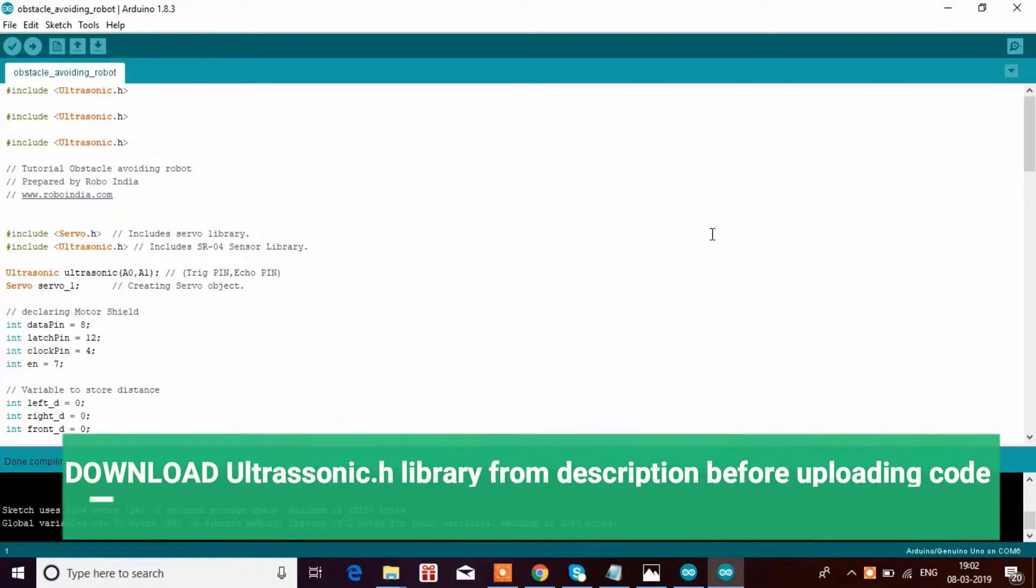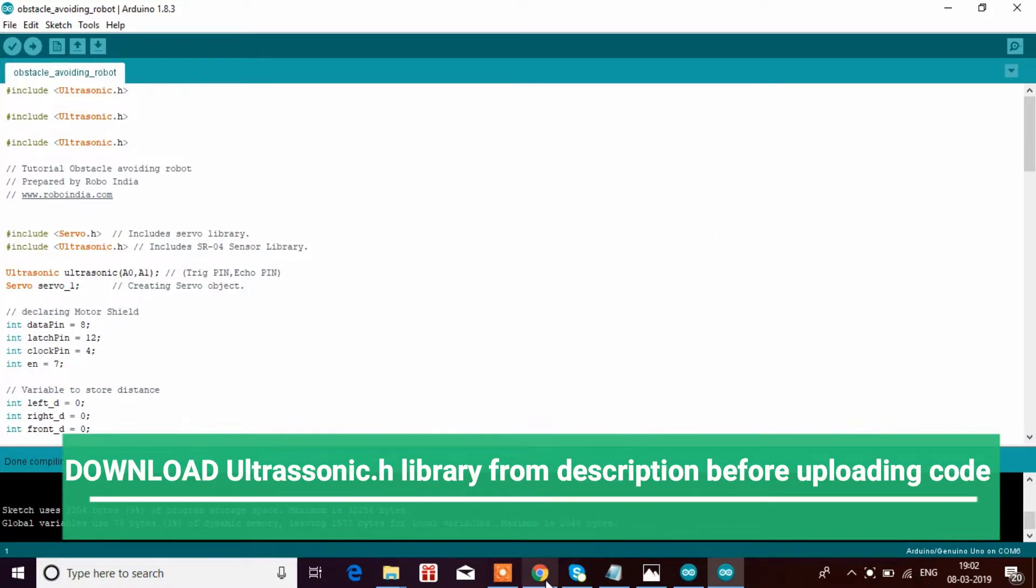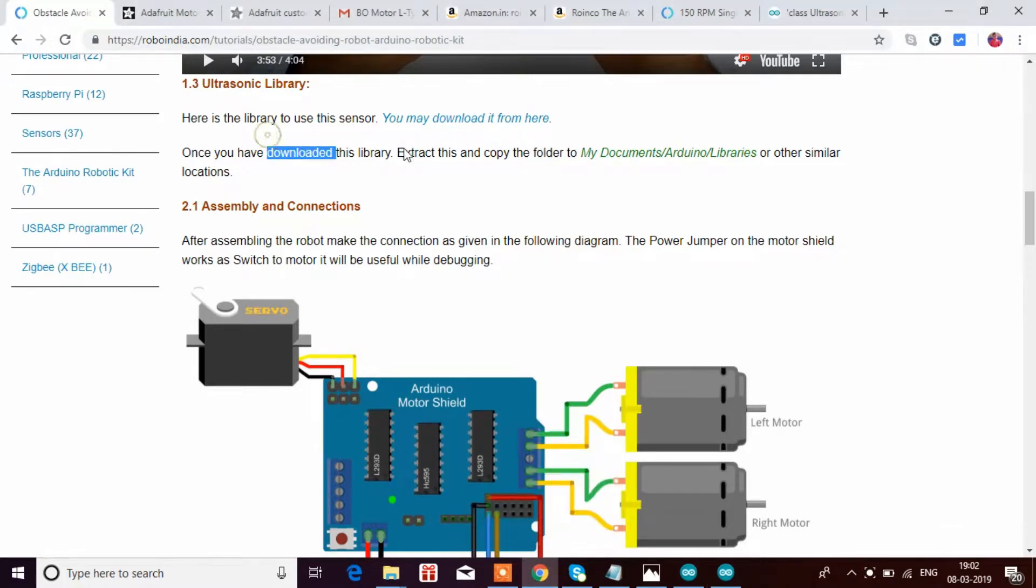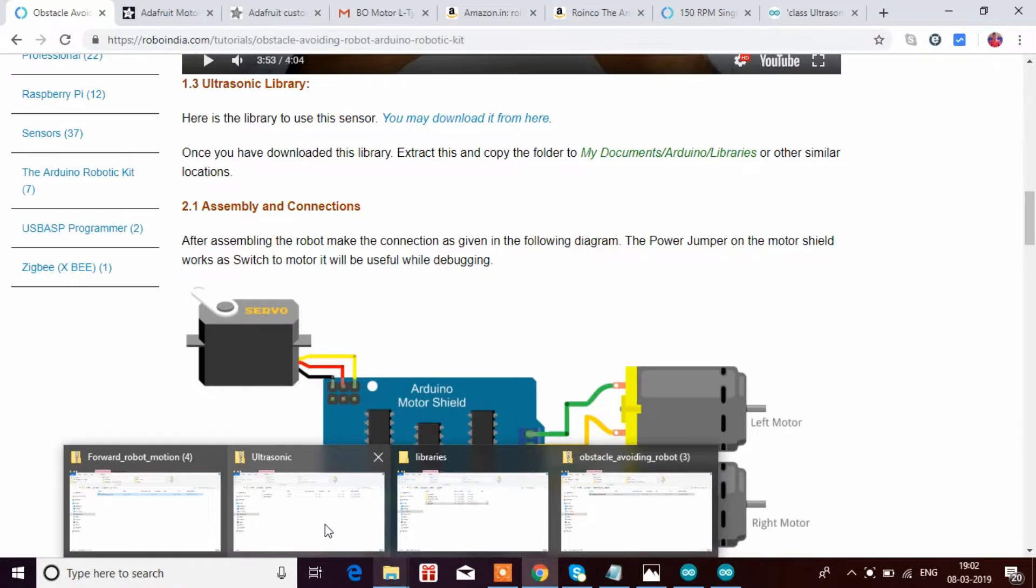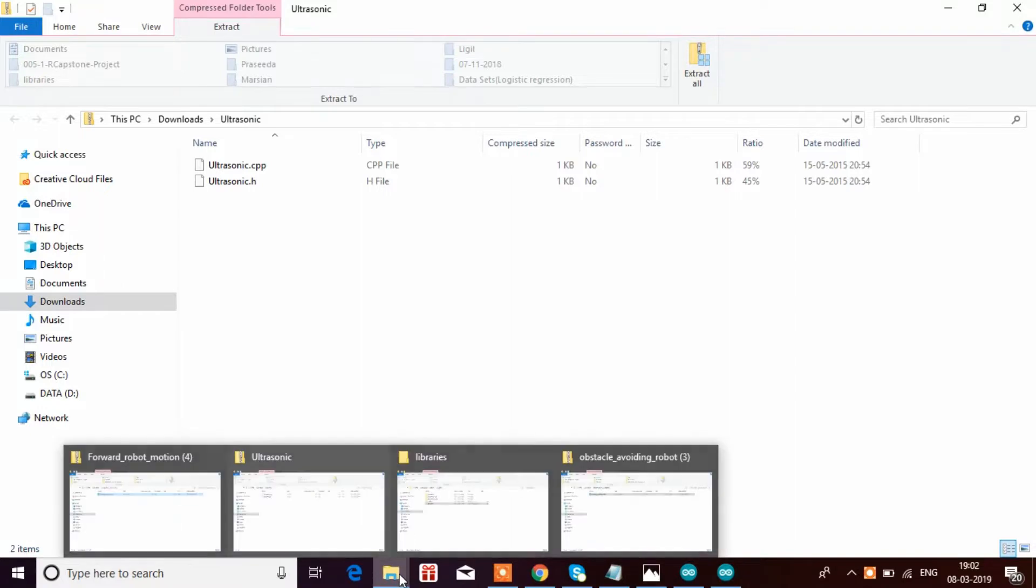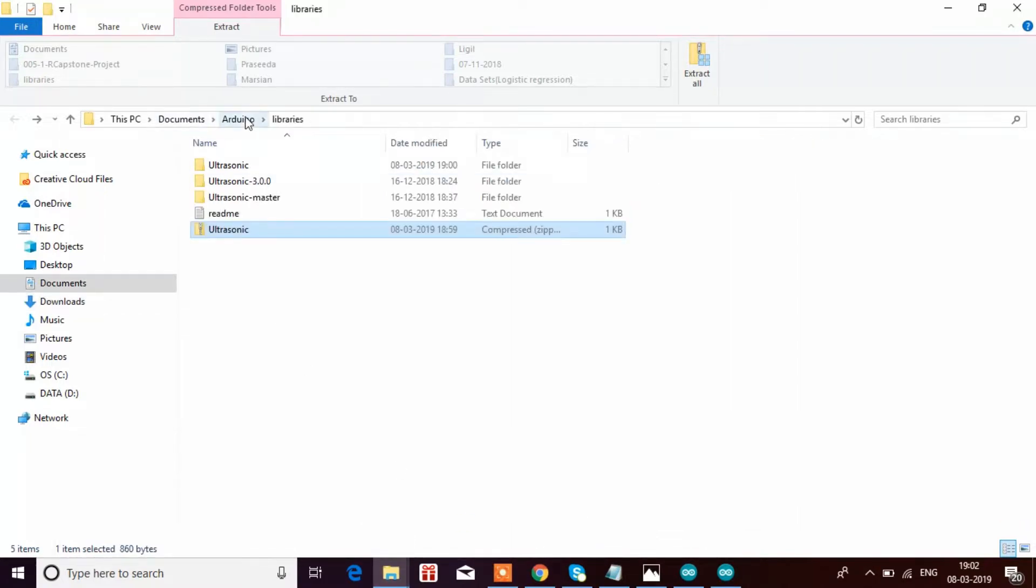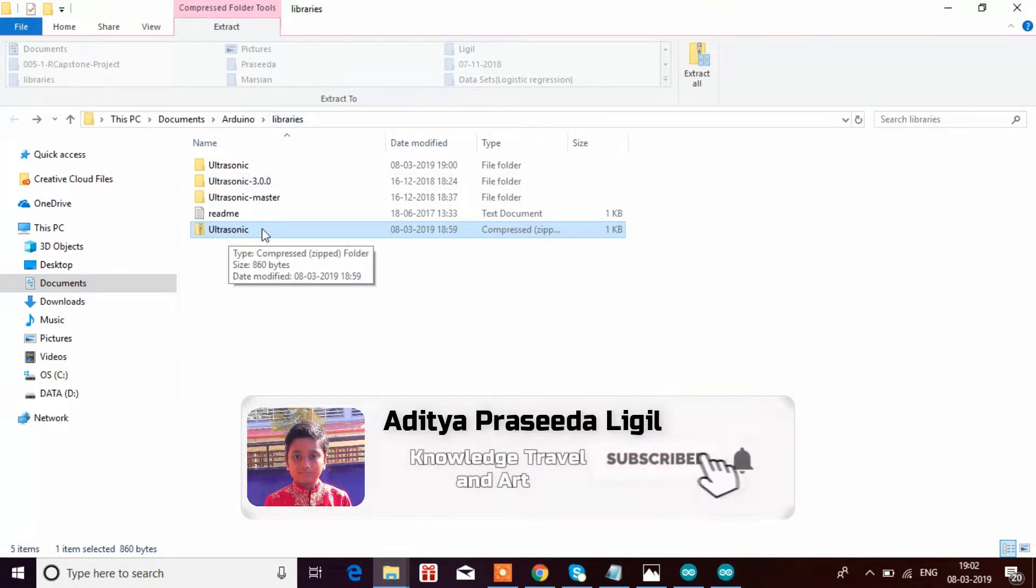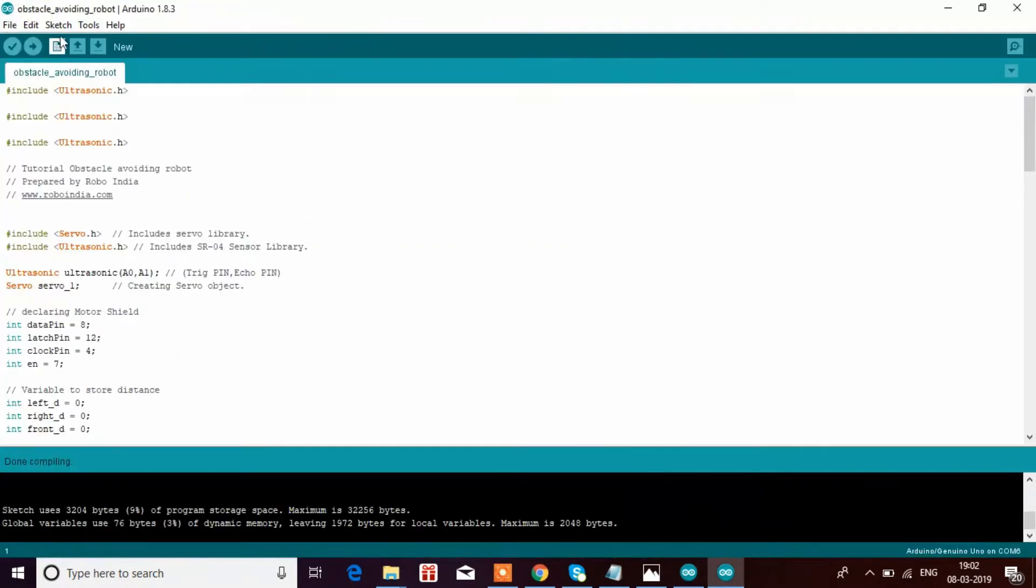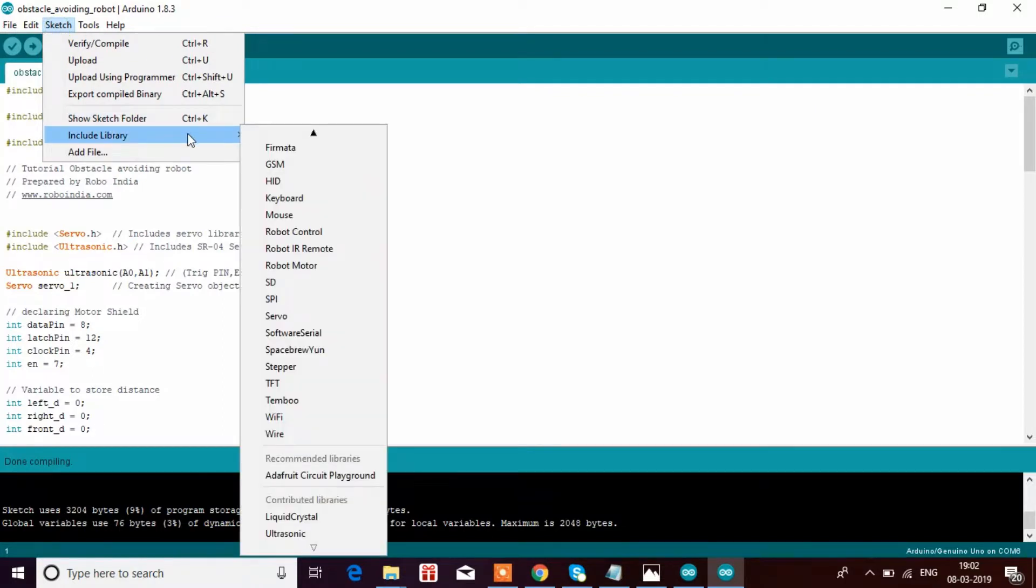So what you have to do now is, I am just going to disconnect the Arduino. We have downloaded the ultrasonic.h library. What we can do is we can go to downloads. This is the ultrasonic.h library. You can just copy the zip file, go to Arduino, Arduino libraries, and you can just place the ultrasonic.zip file. Then what you have to do is we have to go back to the code, obstacle avoiding code.